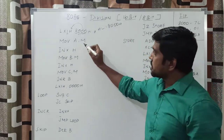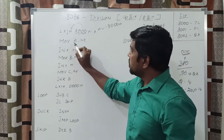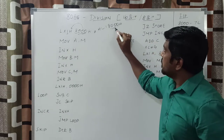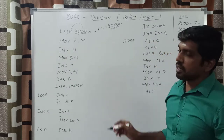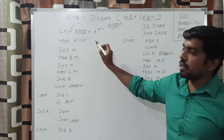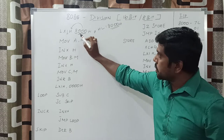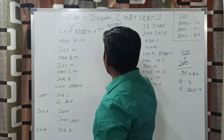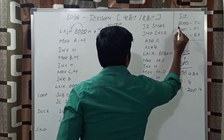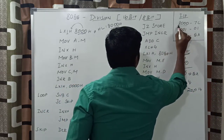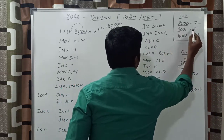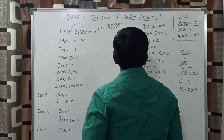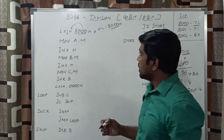The next instruction is MOV A, M. Whatever value is present in this memory location, the content is transferred to the accumulator register. The memory location is 8000h. The 8-bit value stored there is 7Ch.